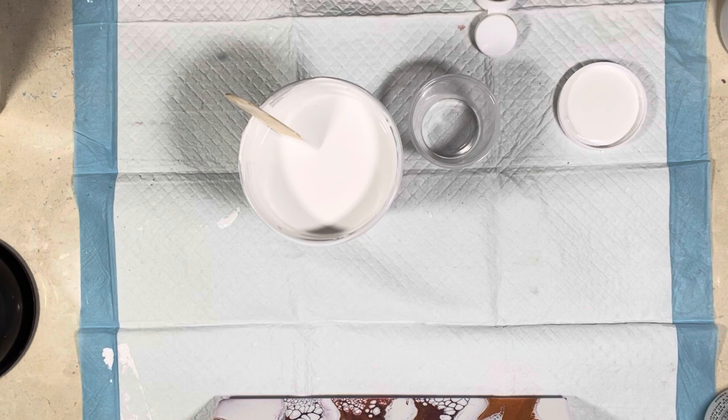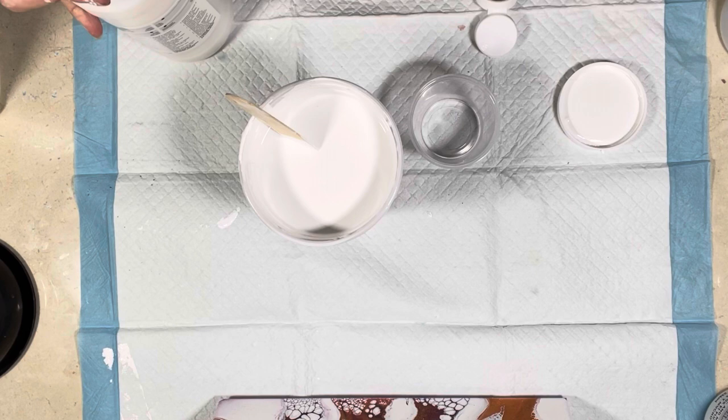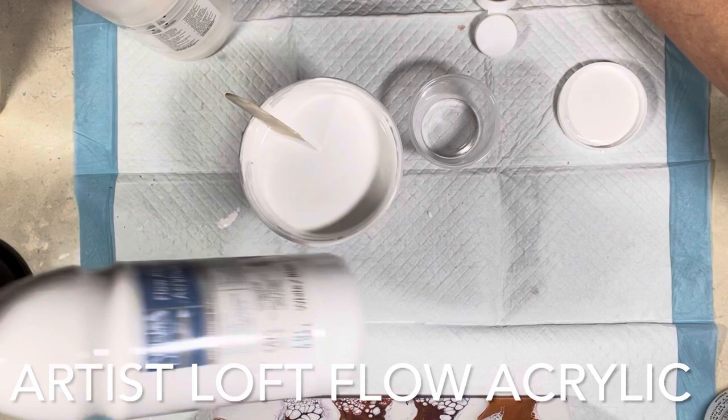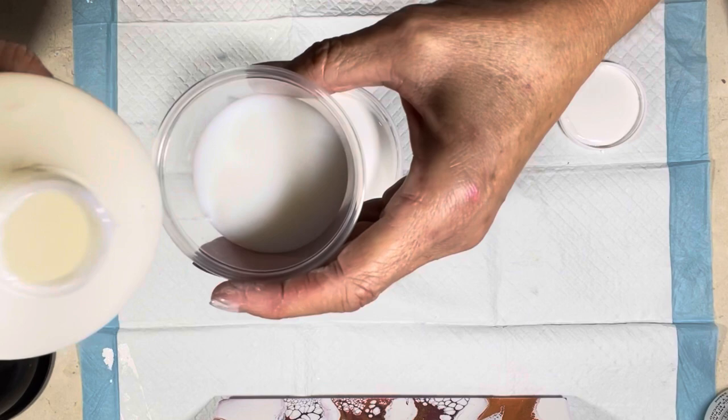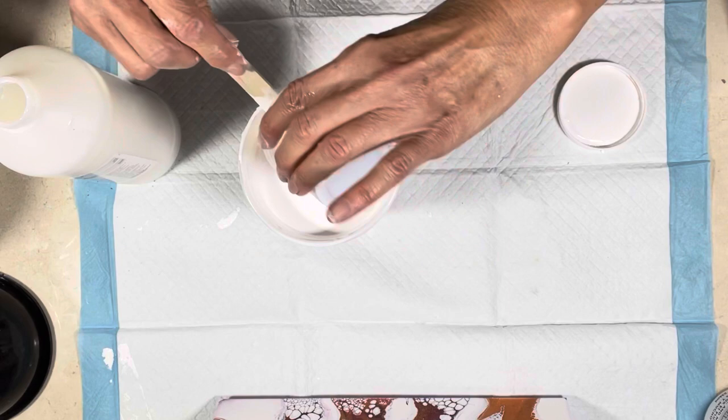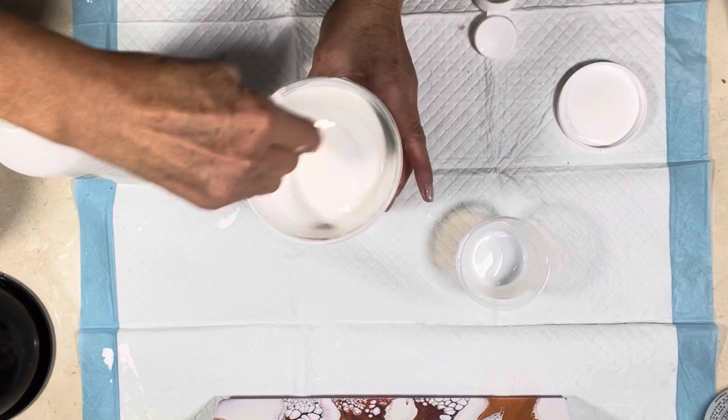Michaels is having a sale on paints and mediums and that includes Golden, and it's buy one get one half off, so even this was on sale. Okay, that's plenty, that's probably even way too much. But we are mixing a big batch. All right so I'm going to mix this up and the rest is going to be water and we're going to need a lot of water.